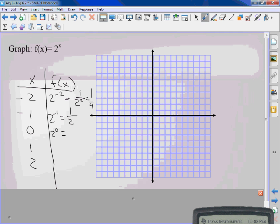2 to the zero? 1. Anything to the zero power is 1. 2 to the first is 2. 2 squared is 4.